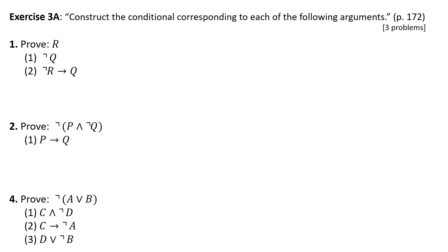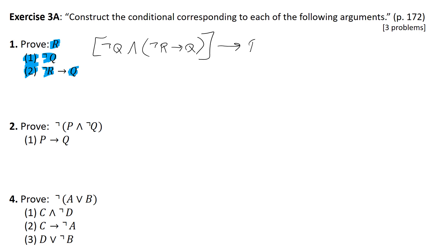We'll now do some textbook problems from exercise 3a, page 172, constructing the conditional corresponding to each argument. Number one: we're to prove R given the premises not Q and (not R implies Q). Not Q denies the consequent of the conditional, which allows us to deny the antecedent to get R — so it is valid. The tautological implication is: [not Q and (not R implies Q)] implies R, combining our two premises as the antecedent and R as the consequent.